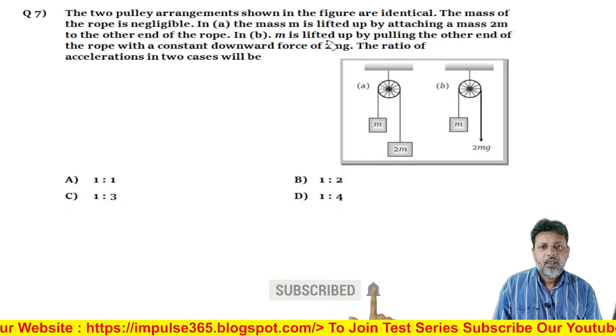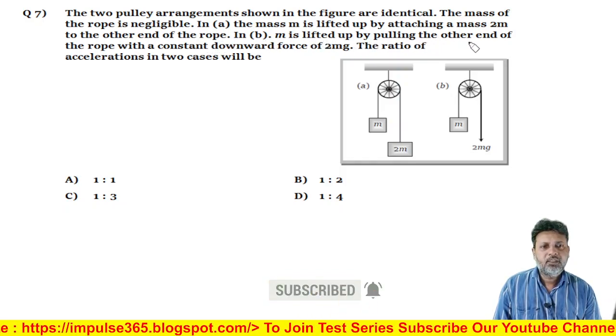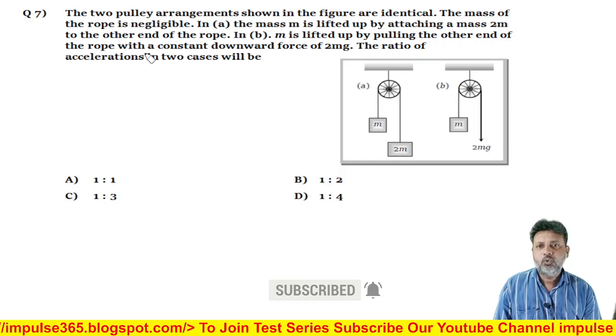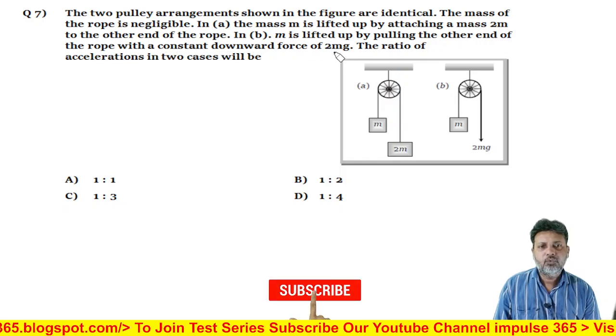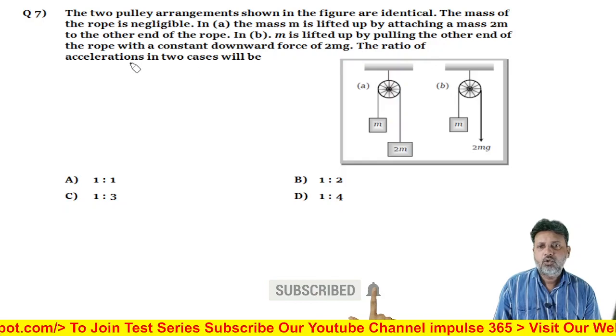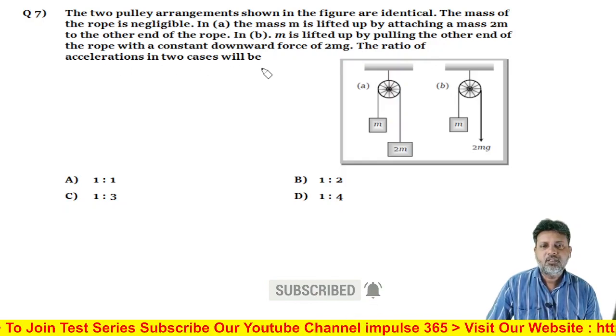In B, M is lifted up by pulling the other end of the rope with a constant downward force 2Mg. The ratio of the acceleration of the two cases will be.